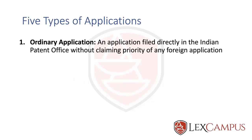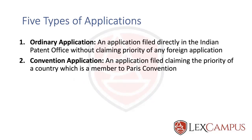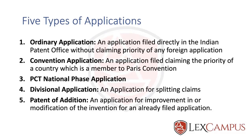The five types of applications include: ordinary application, convention application, PCT national phase application, divisional application, and patent of addition. These are the five applications that you can file under the Patents Act.